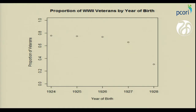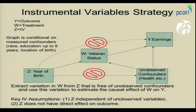The instrument Angrist and Kruger proposed was year of birth. The idea is that you first became eligible to serve in the military when you turned 18. If you were born from 1924 to 1927, you would have turned 18 during the war. Whereas if you were born in 1928, you would have turned 18 after the war was over. So this variable satisfies the assumption that it affects the treatment.